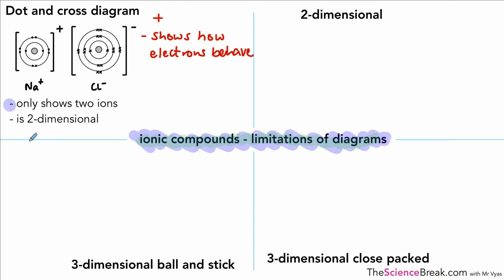The only problem is we've only got two ions shown here, and in fact ionic compounds are pretty much all giant ionic lattice structures. This doesn't actually show all the different ions that might be interacting to form the structure, and of course this is two-dimensional when the actual ionic compounds are three-dimensional in real life.